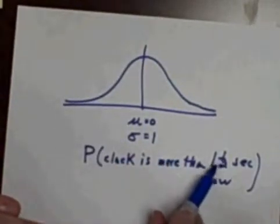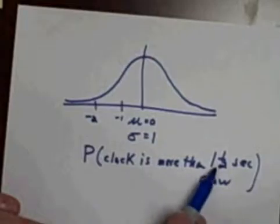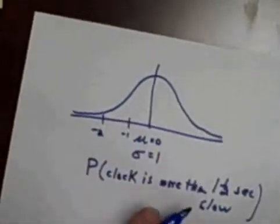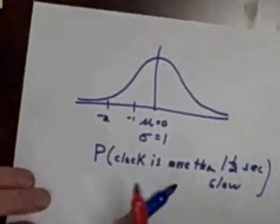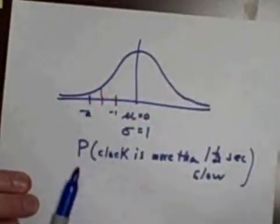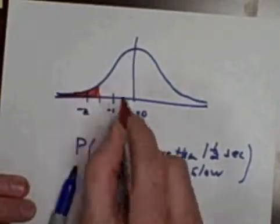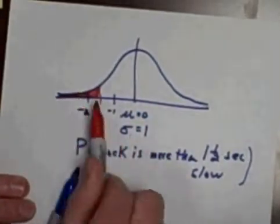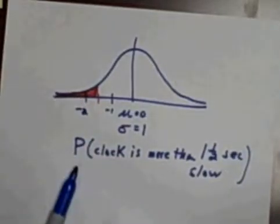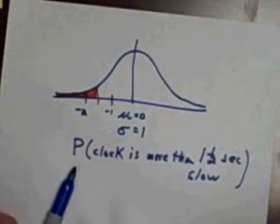Remember, this is the fast side over here and this is the slow side. If I'm talking about one and a half seconds — here's negative one, here's negative two — to be more than one and a half seconds slow means right here at negative one and a half. So we're talking about all the clocks down in this area. These are all the clocks that are more than one and a half seconds slow, and if I randomly pick a clock off the assembly line, what's the probability I get one of those really slow clocks?